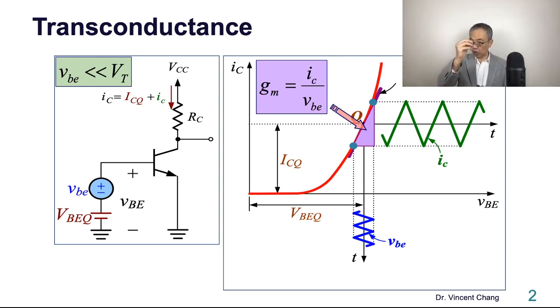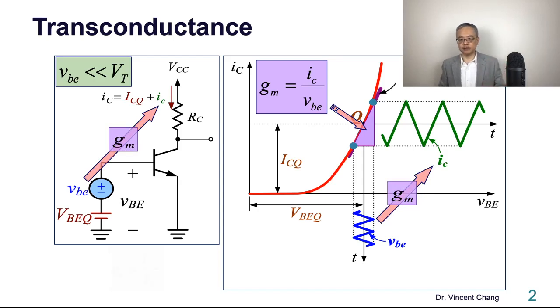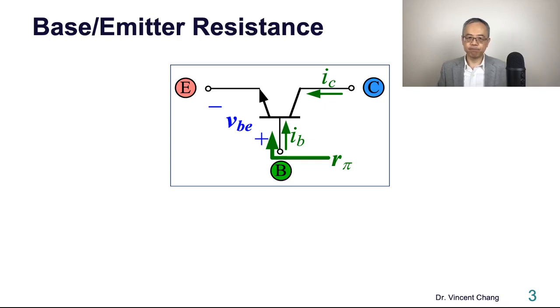And the slope of that straight line connects the relationship between the output current and the input voltage VV, which is defined as transconductance and highlighted by the purple triangle. IC divided by VV equals the transconductance. And this is the formulation. The BJT's transconductance is proportional to the DC bias current.